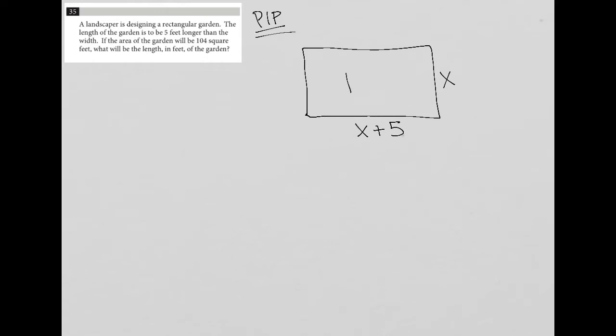okay, so then the area is 104, but I also know that area for a rectangle is equal to length times width. So I'm going to say that that makes 104 equal to X plus five, and I'll just throw the X right in front, times X.